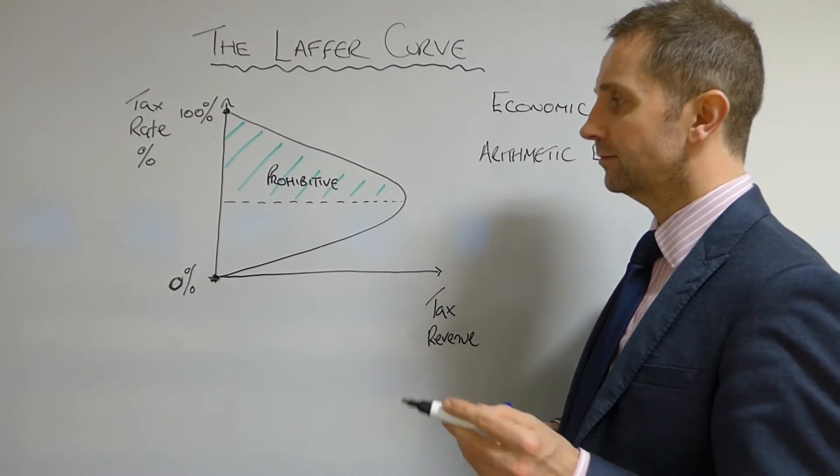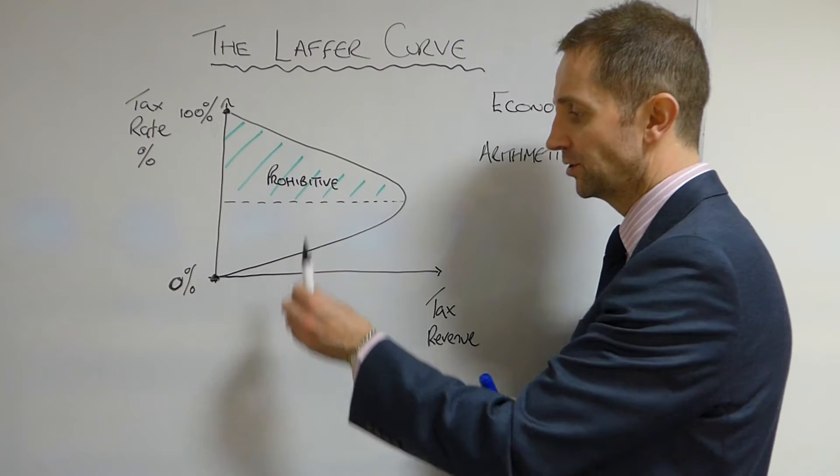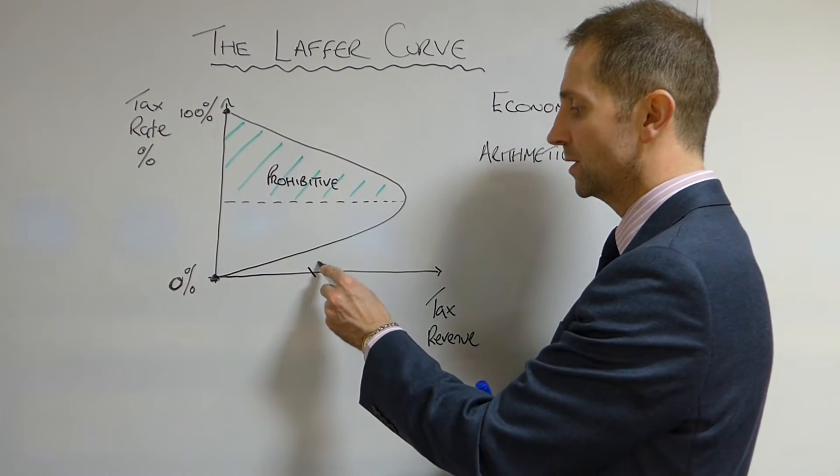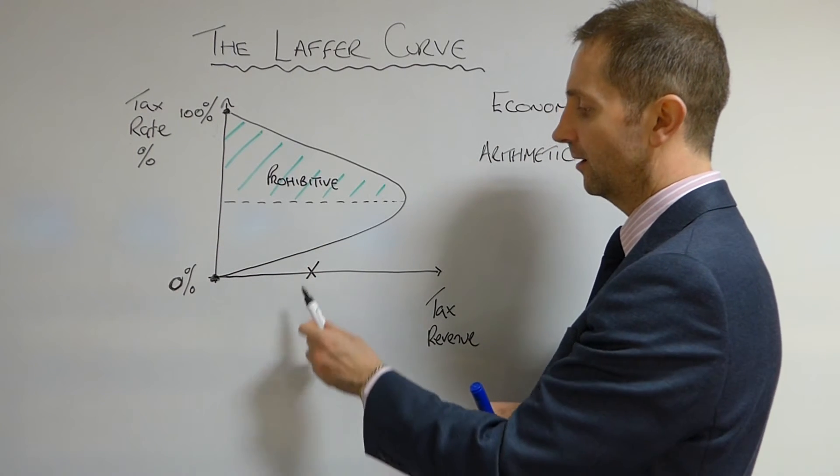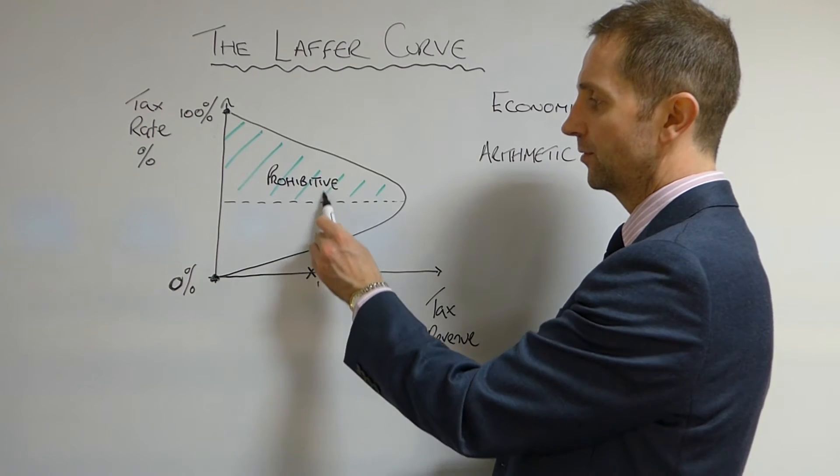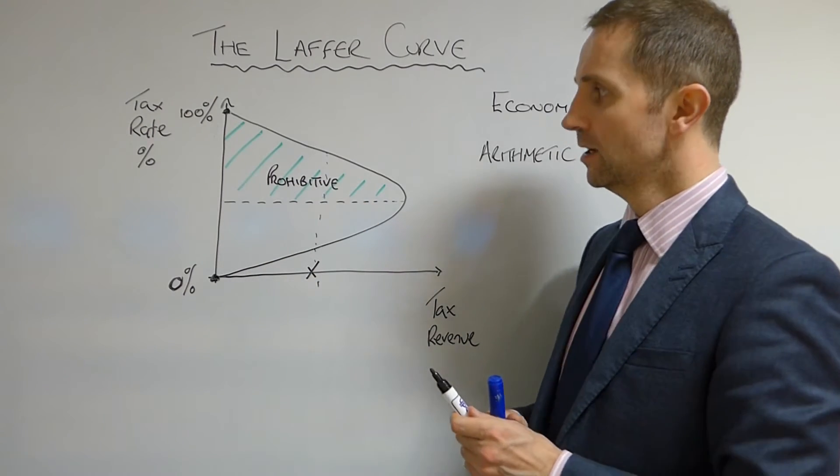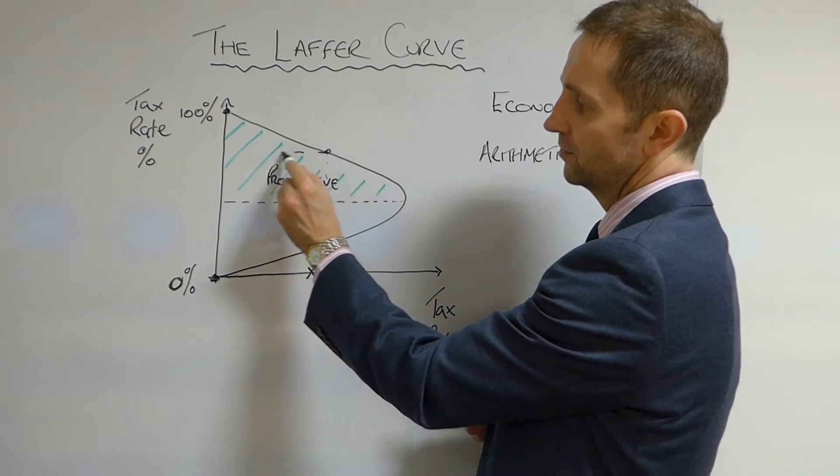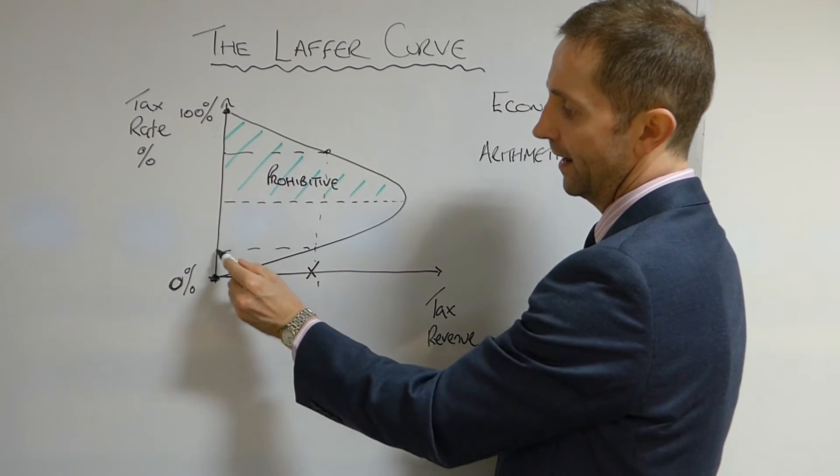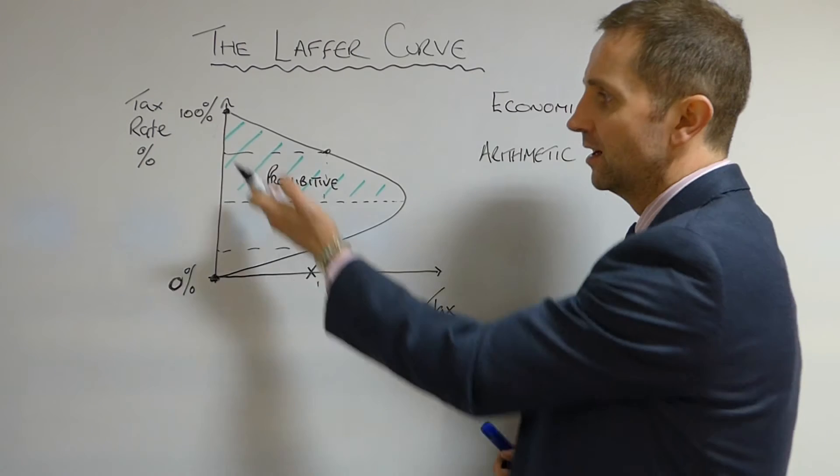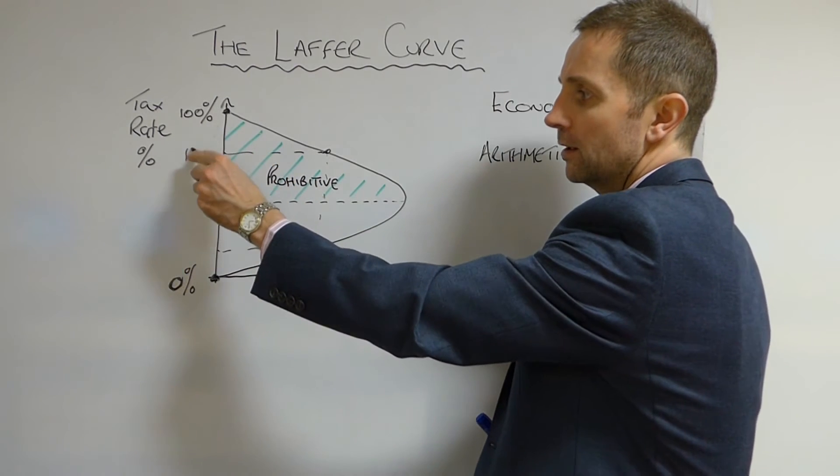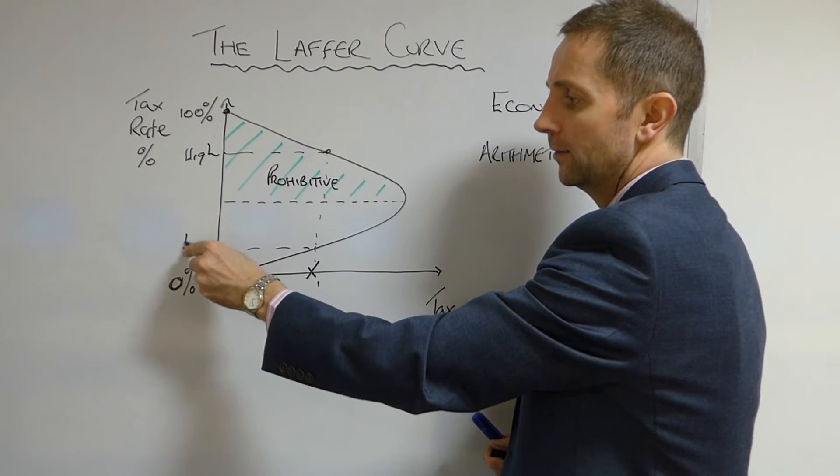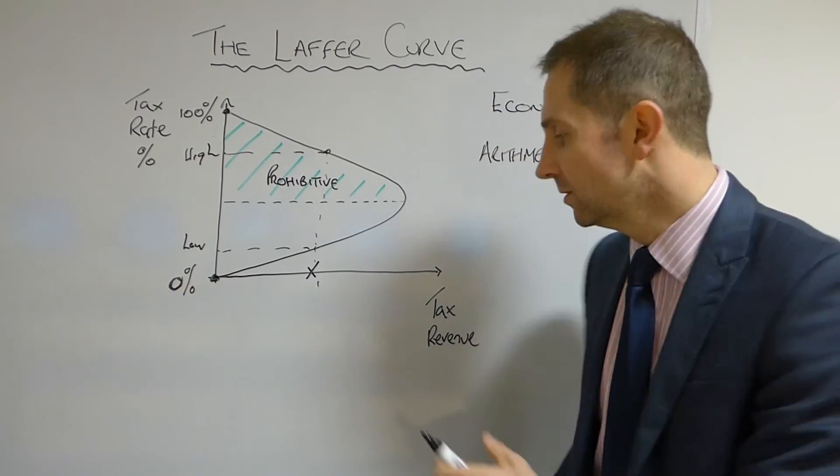So if you consider a point X which is here and we take this up through the curve like so, you can see there are two tax rates. There's one there and there's one there. Two tax rates, a high one and a low one, just call that high and low, which will deliver the same amount of tax revenue.